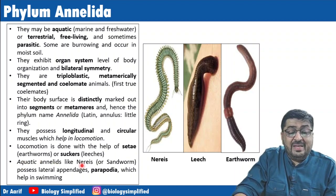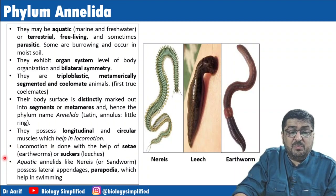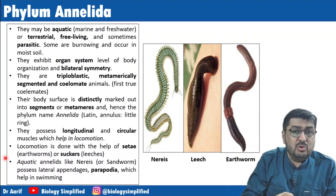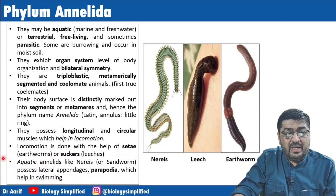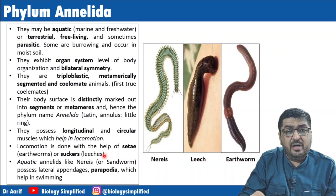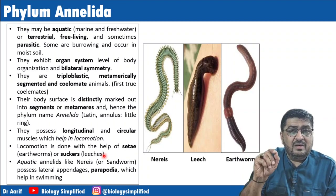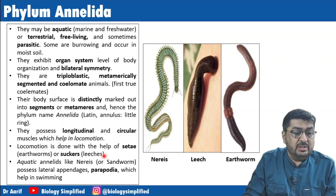Aquatic Annelids like Nereis, also called sandworm, have lateral appendages called parapodia which help in swimming. This is a favorite exam question — they may give you three organisms and their three modes of locomotion as a match-the-column type question. To summarize: setae for earthworm, parapodia for Nereis, and suckers in the case of leech.